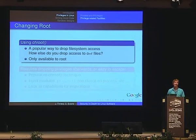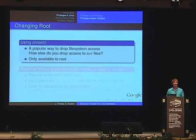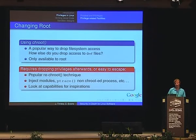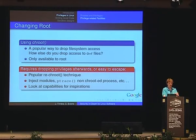Chroot is probably one of the most used tricks to drop privileges, and a very popular way to drop filesystem access. The question is: how else would you drop access to files that are readable by anyone? The problem with chroot is it requires dropping privileges afterwards, because otherwise it is extremely easy to escape a chroot sandbox — as root you can do whatever you want: load modules, change the network configuration, ptrace any process on the machine. So you must drop privileges after calling chroot.